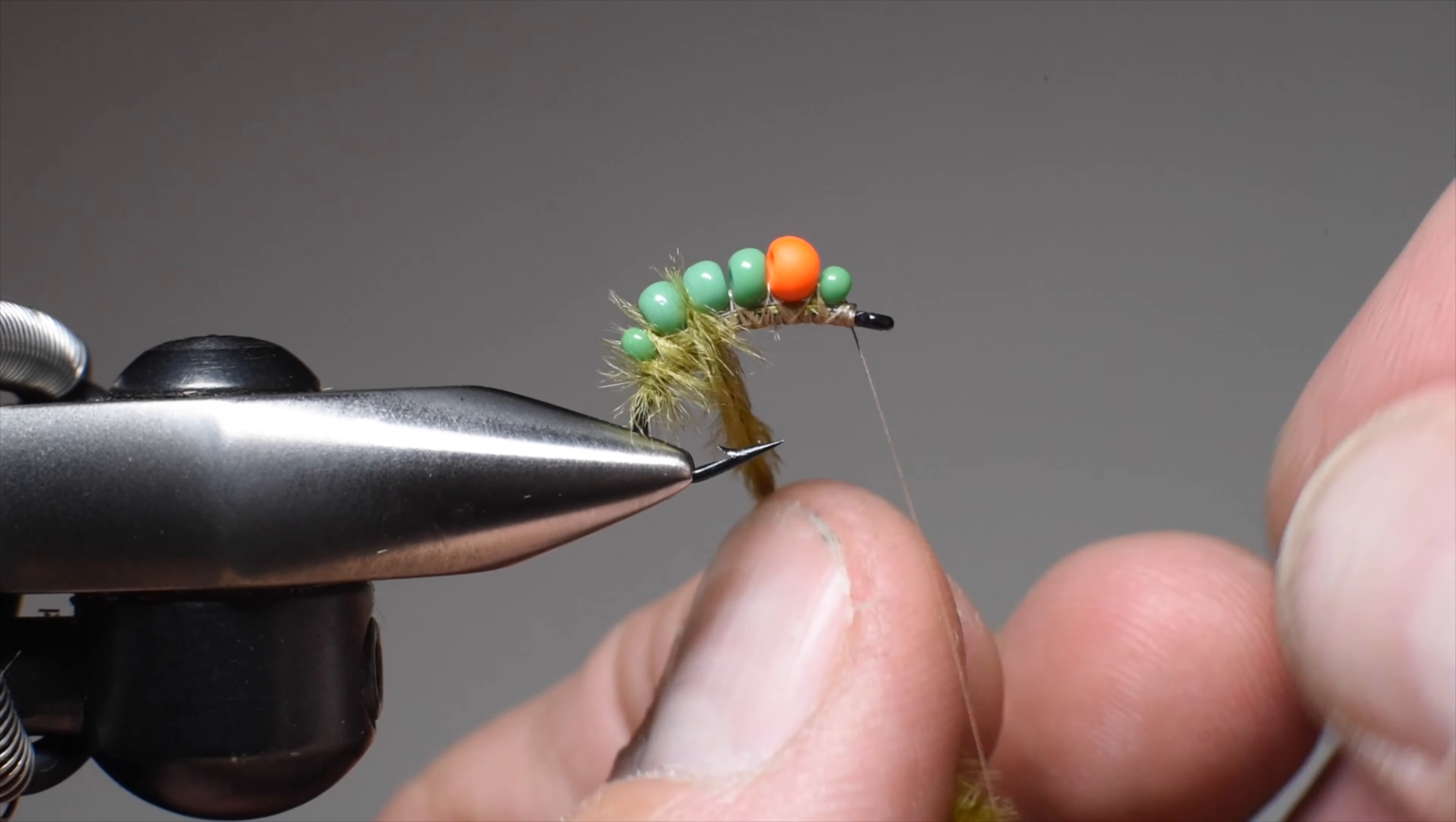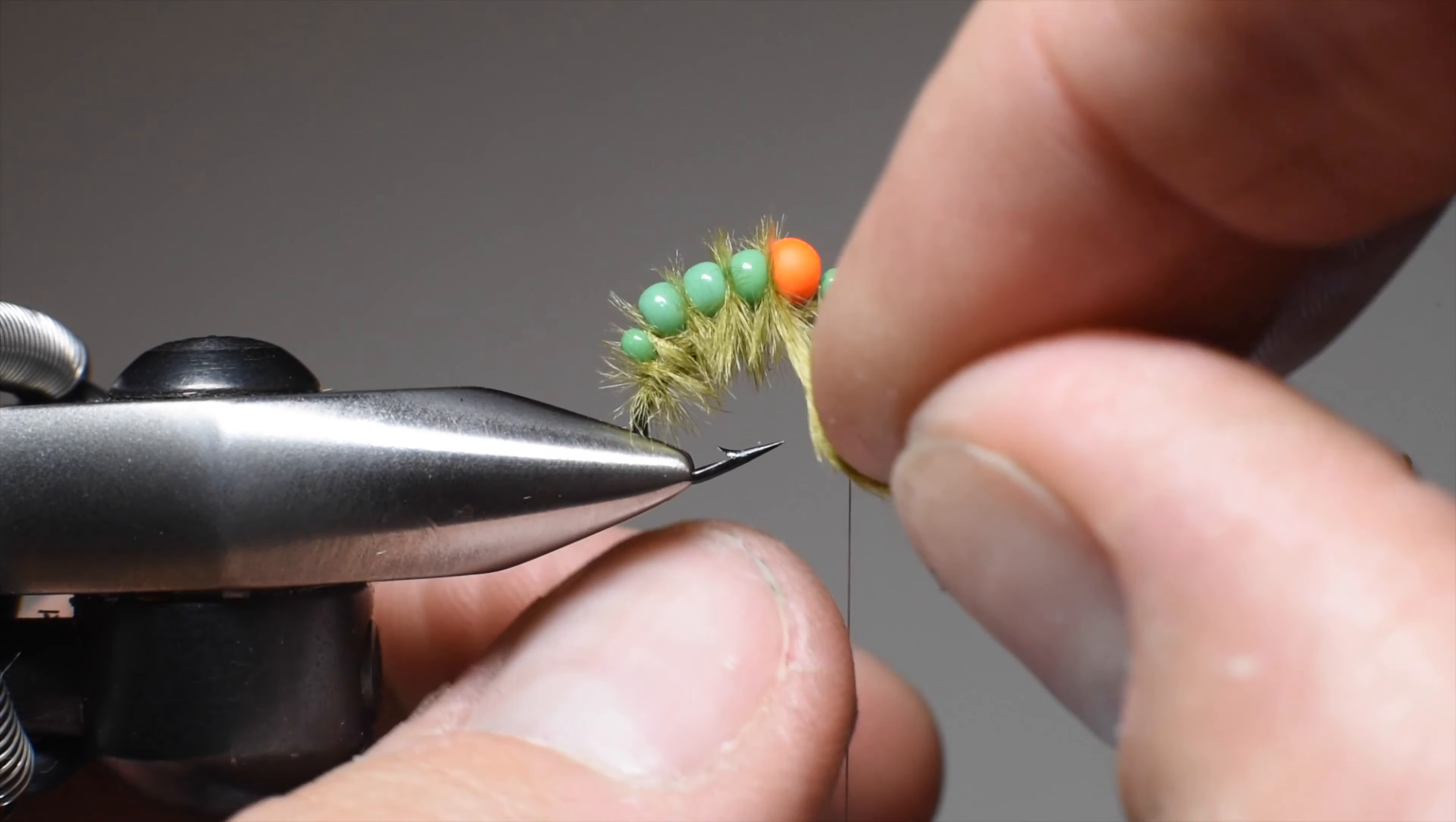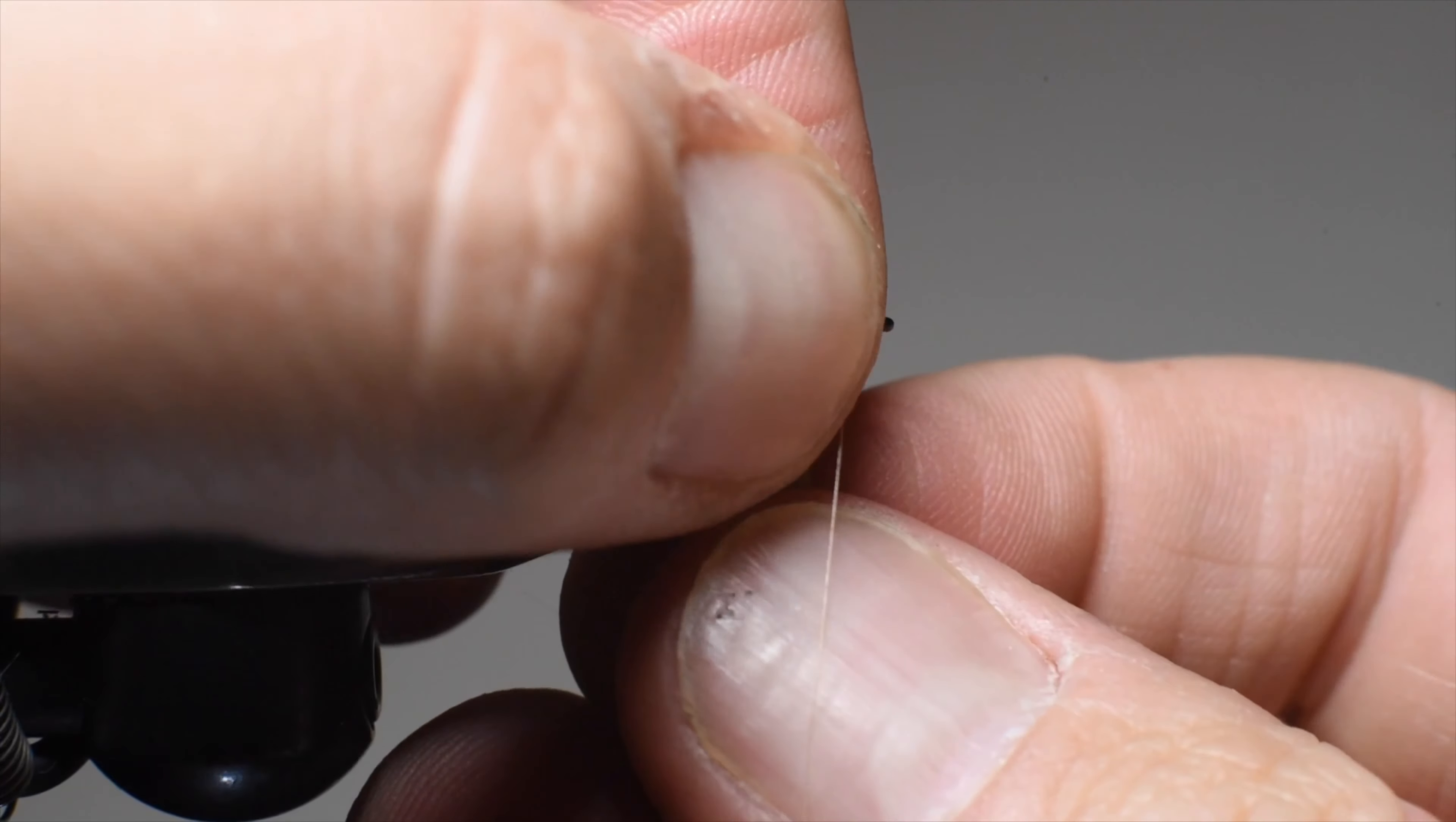You can see it's going to go everywhere. I've got three strands here. Get a couple wraps behind that first bead and work my way up, going directly through those gaps we created with the thread. As you get in this middle section, I pull it to the back, then towards the eye, alternating as I go underneath the shank.